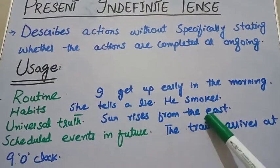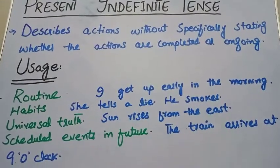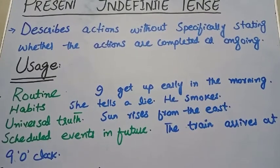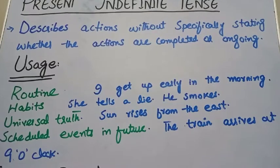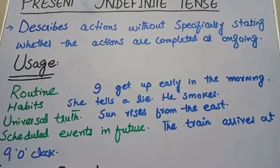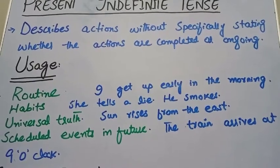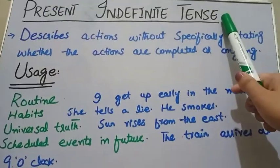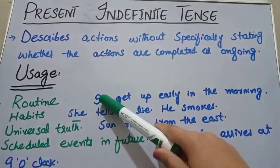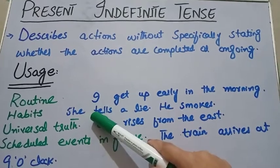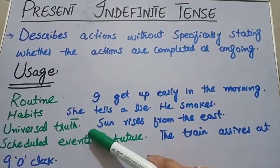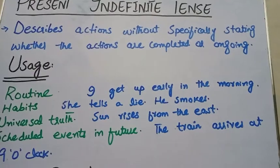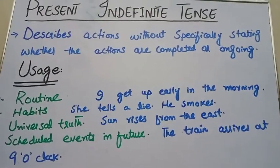Third, the present indefinite tense is used for universal truths. For example: 'The sun rises from the east,' 'The earth revolves around the sun,' 'The earth is bigger than Mercury,' 'The sun sets in the west.' These are all true and universal actions. So we use the present indefinite tense for routines, habits, and universal truths. Fourth, it is used for scheduled events in the future.